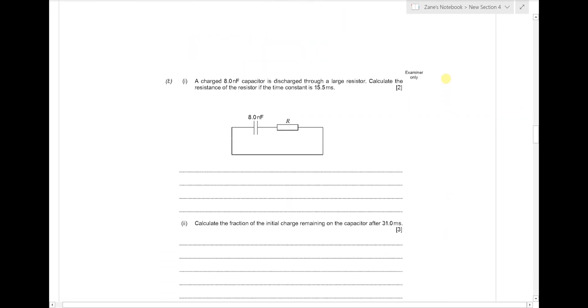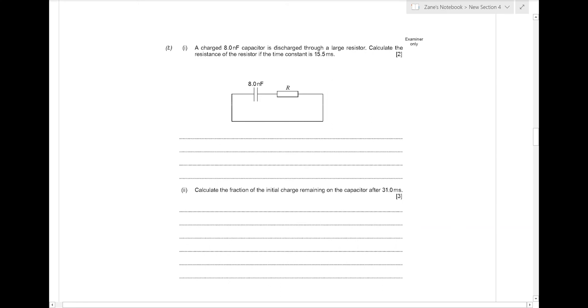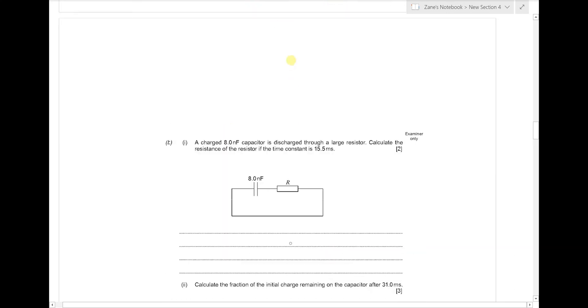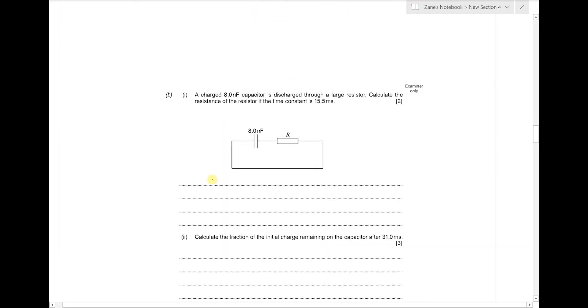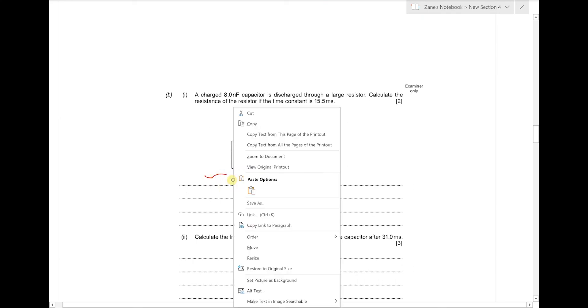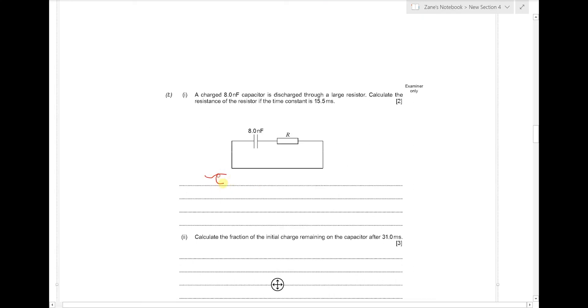The next part of the question talks about the capacitor being discharged through a large resistor. We've got to calculate the resistance if the time constant is 15.5 ms. Well, this is just a matter of remembering that the time constant is R times C.